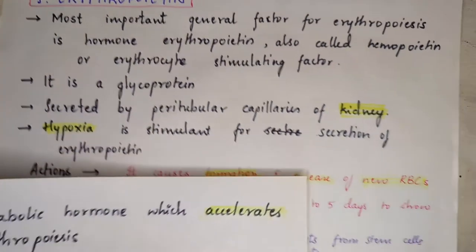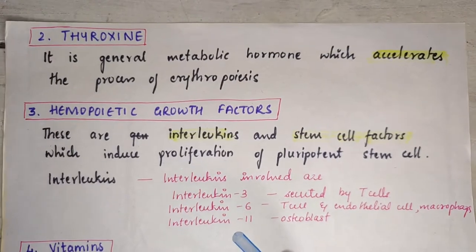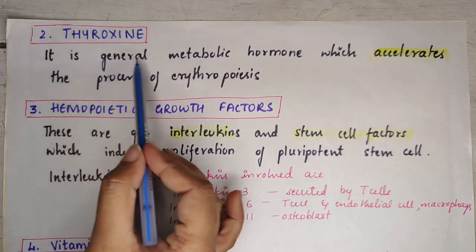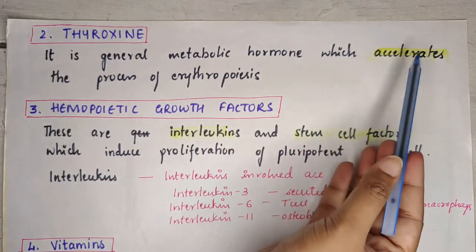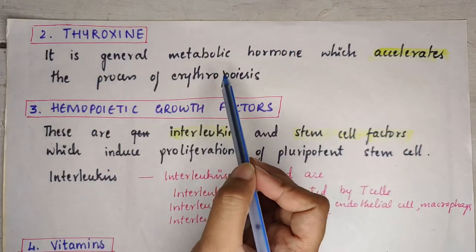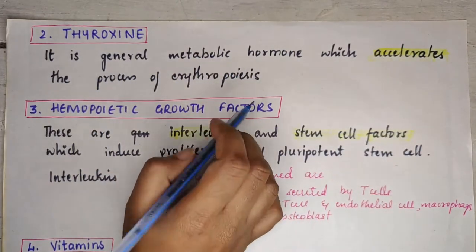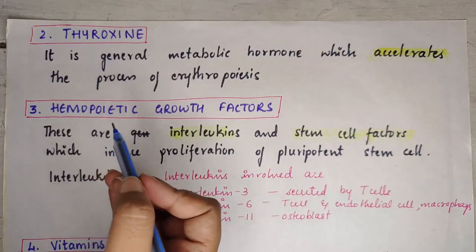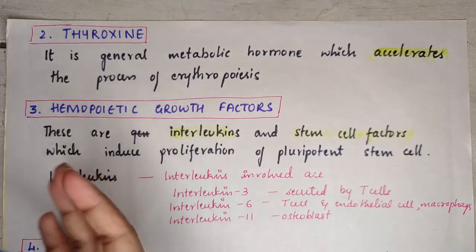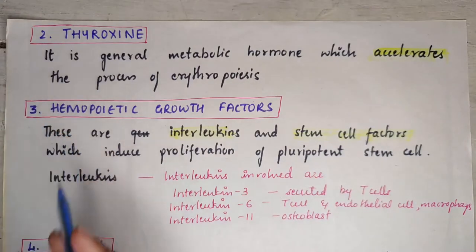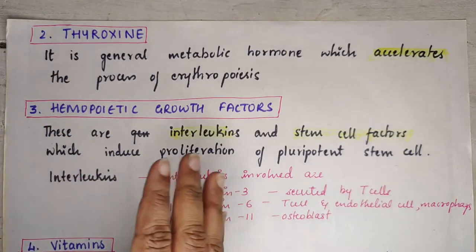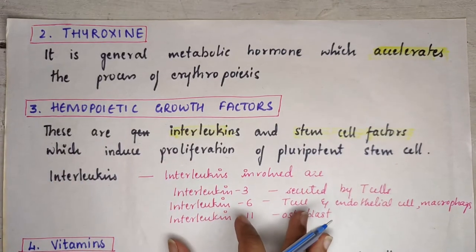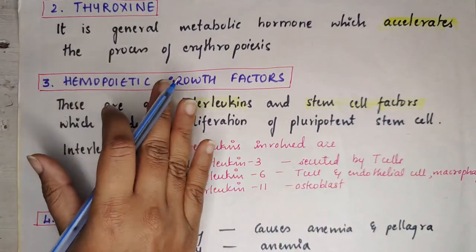The next general factor is thyroxine, the thyroid hormone. It is a general metabolic hormone that accelerates the process of erythropoiesis. In hyperthyroidism, polycythemia is commonly seen because excess thyroxine accelerates RBC production — more thyroxine leads to production of more RBCs.